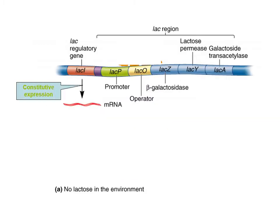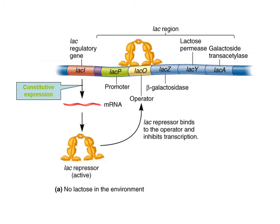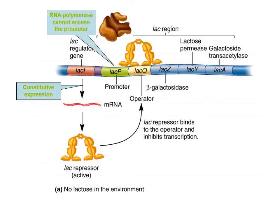In a no-lactose environment, the lacI gene makes mRNA, the mRNA makes the repressor, and the repressor represses the lac operon genes. RNA polymerase can't bind, so we get no transcription — which makes sense because there's no point in making the machines to break down lactose if there is no lactose present. The lac operon is off.